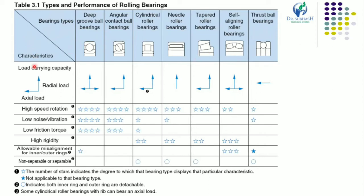Different characteristics are indicated in the table: load carrying capacity, high speed rotation, performance during low noise and vibrations, low friction torque, high rigidity, allowable misalignment for inner and outer rings, and whether the bearing is separable or non-separable. The number of stars indicates the degree to which a bearing type displays a particular characteristic, while a full star means not applicable to that bearing type.